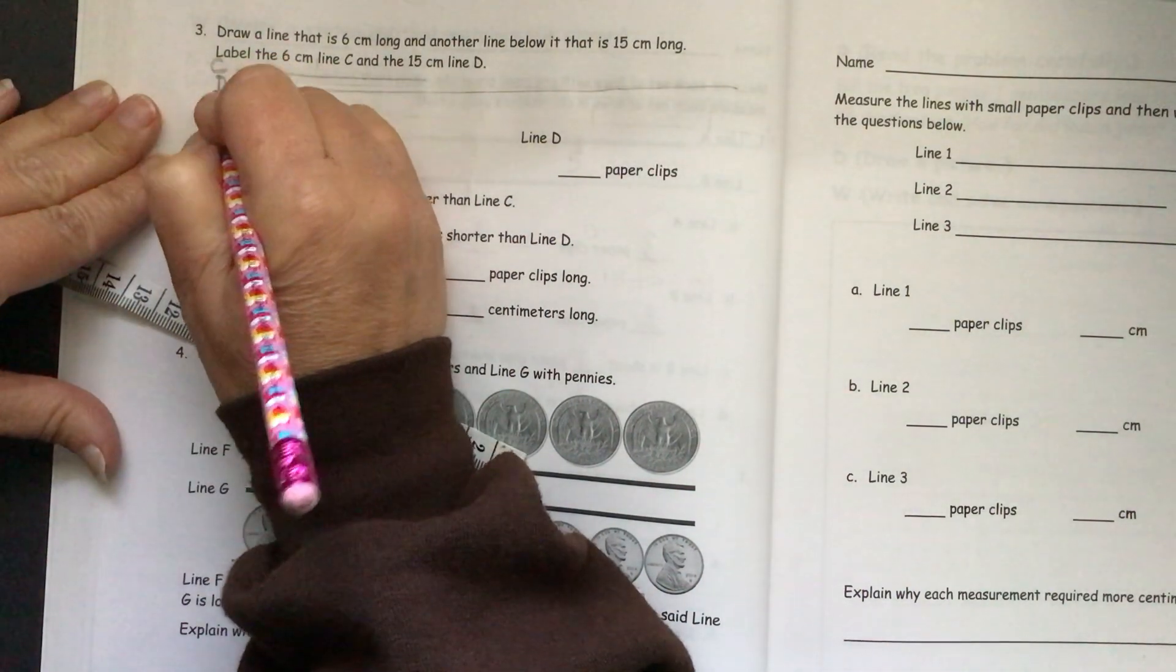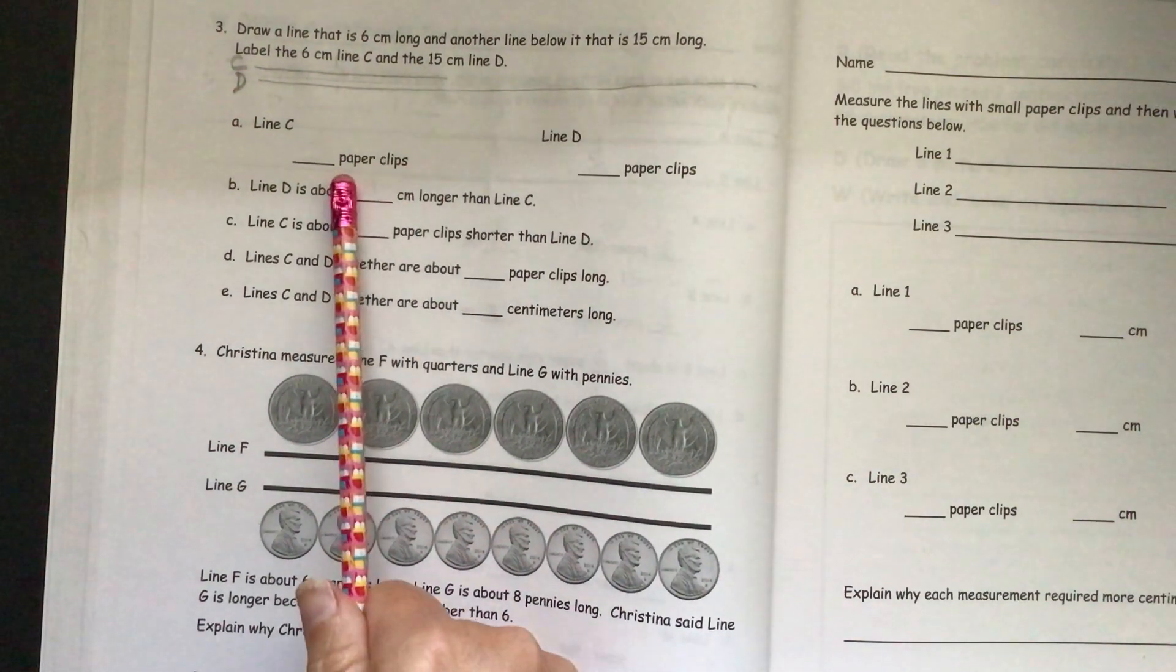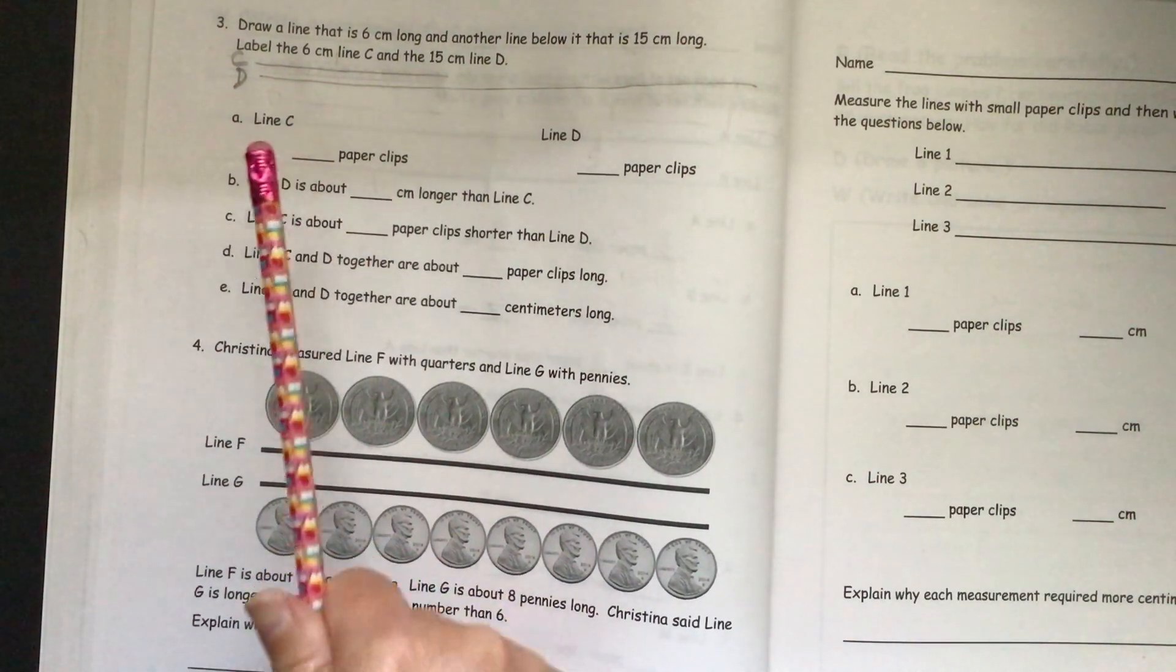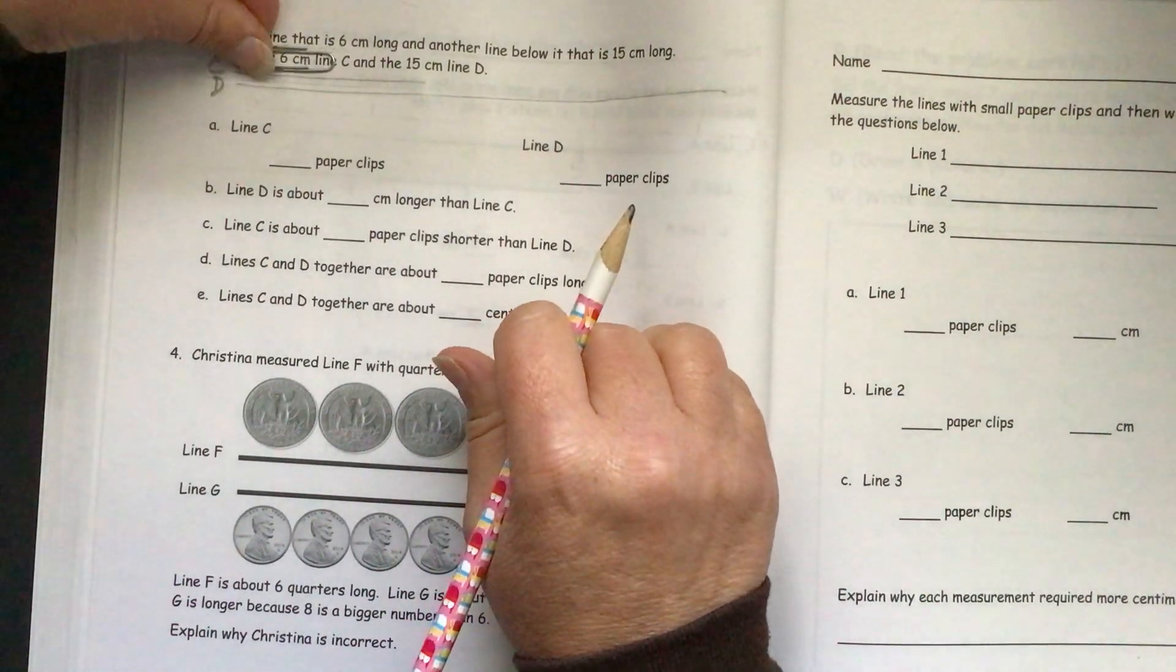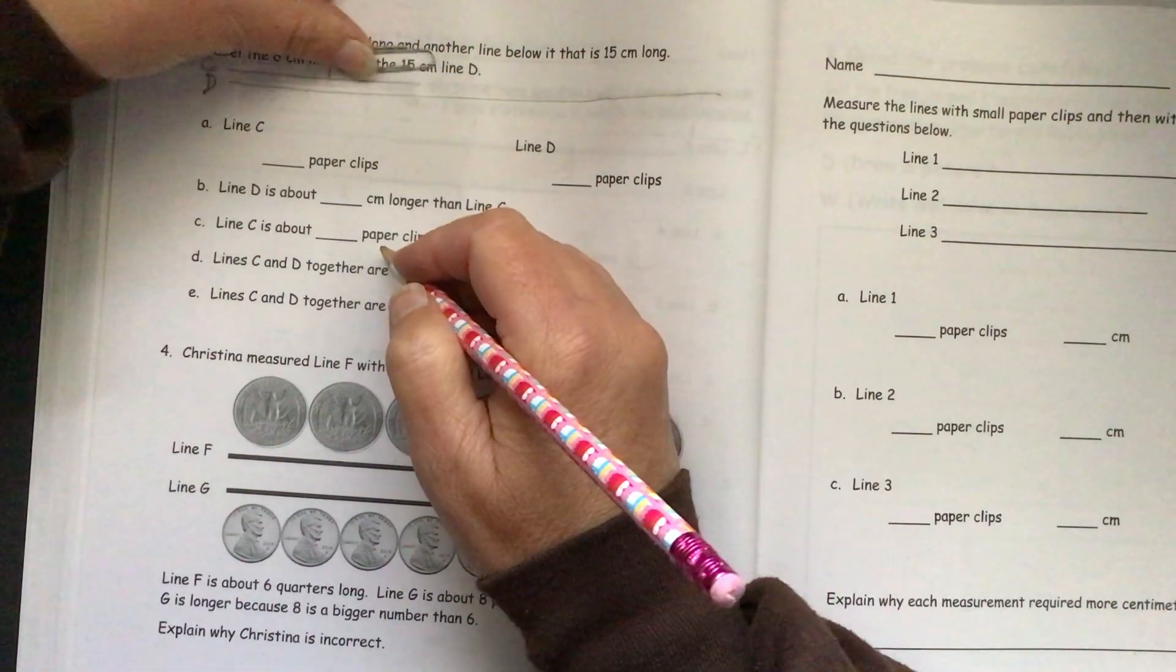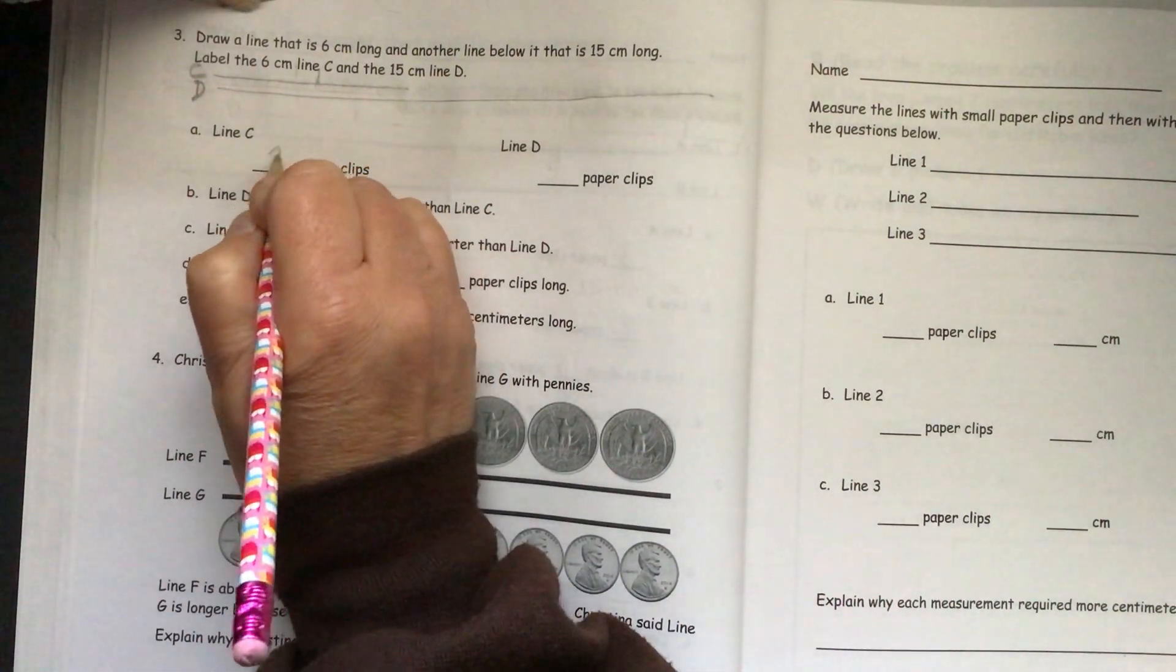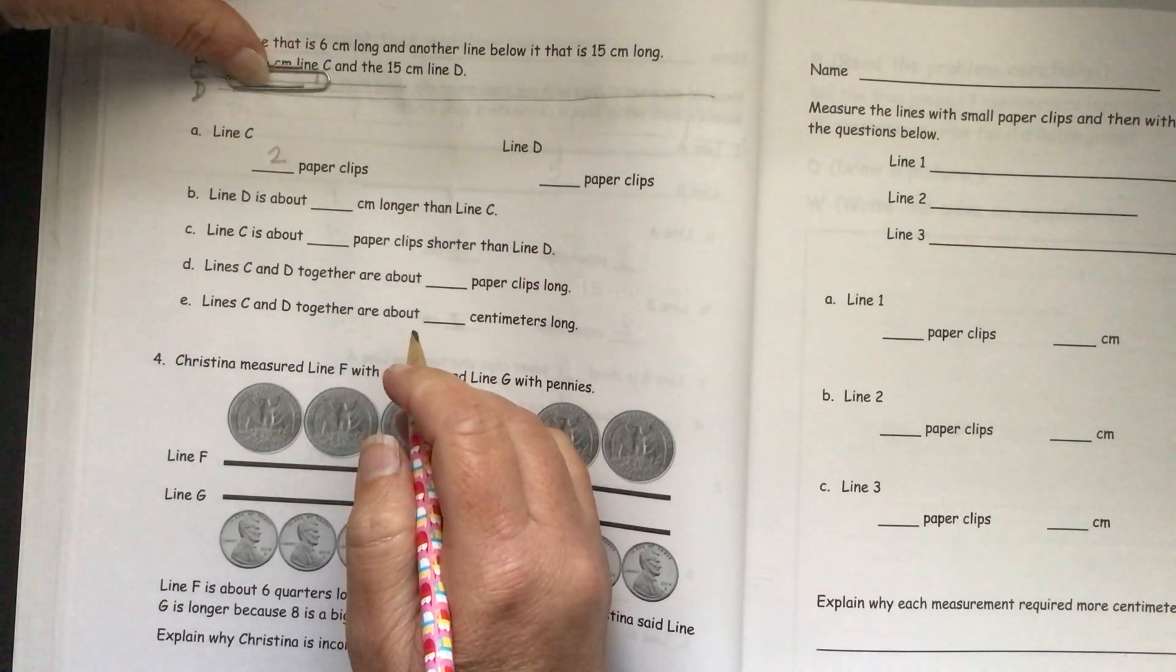There we go. So there's D. And they want us to measure line C with paper clips. So I'm doing our mark and measure. So C is about two paper clips long. And line D.